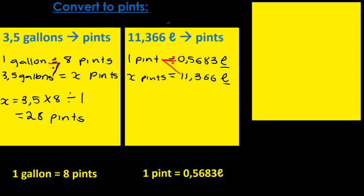So the answer that you get, you write it as follows. x is equal to 11.366 times by 1 then divided by 0.5683. And then the answer you should have is 20 pints.